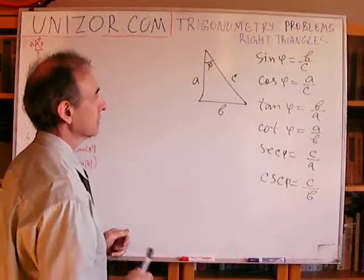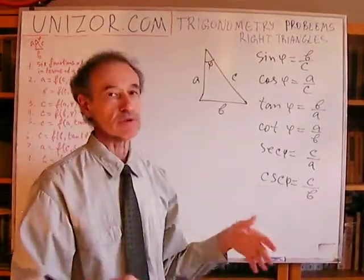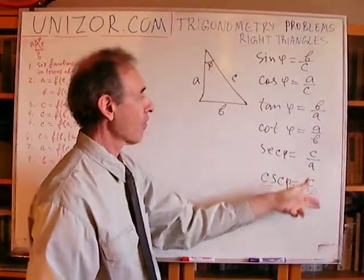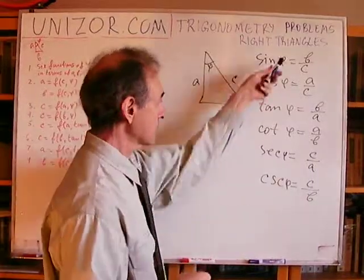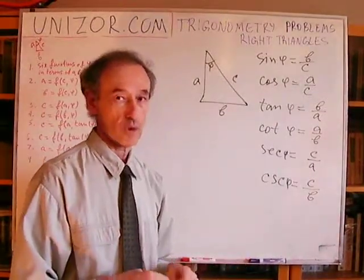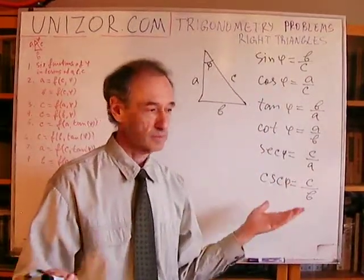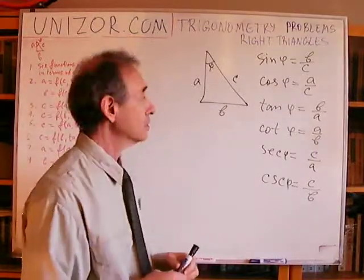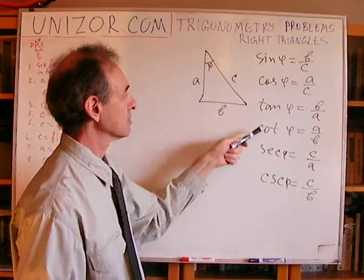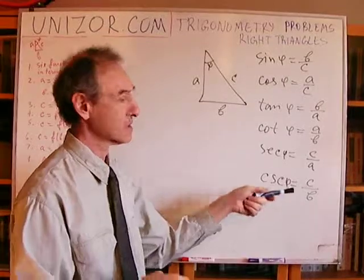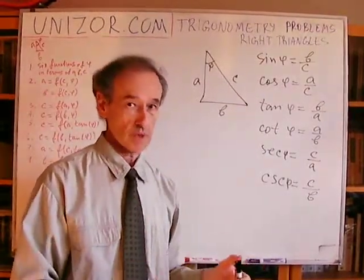Problem number one: express all six trigonometric functions of the acute angle phi in terms of the sides of the triangle. At least sine and cosine are the ones you really have to remember, because everything else is derived. Tangent is sine over cosine, cotangent is cosine over sine, secant is one over cosine, and cosecant is one over sine. So everything else basically follows from those two.